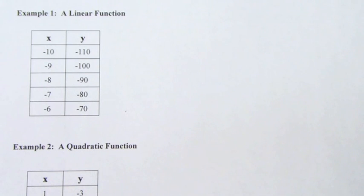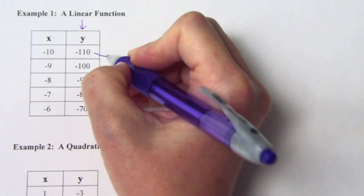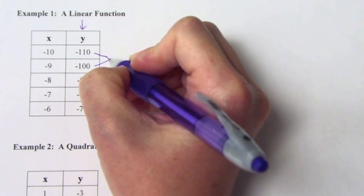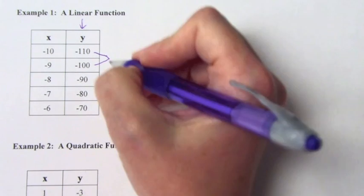Here's what they all look like. Let's start with the linear. What you do is you look at your output values, your y values, and you look and see what the difference is in between each of the values. What is the difference between negative 110 and negative 100? Negative 10. It's just 10, right? There's a difference of 10.